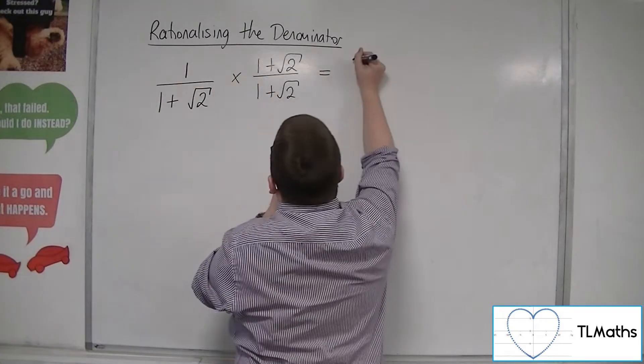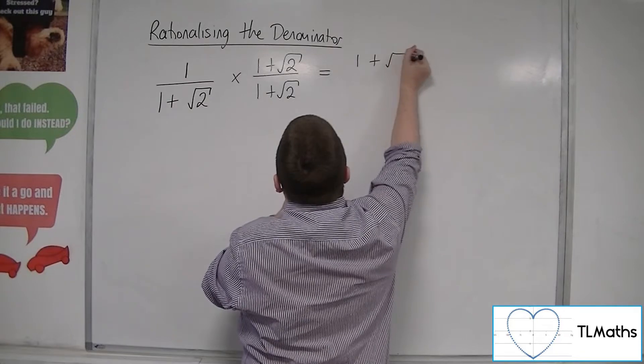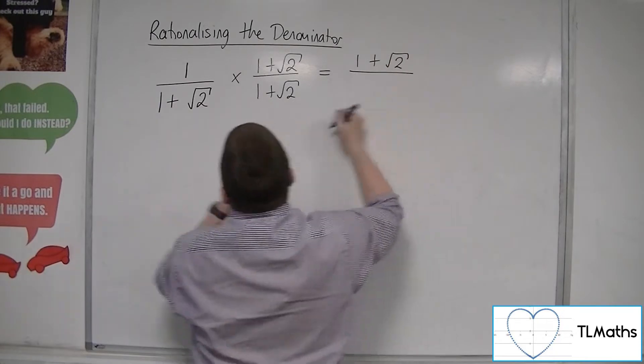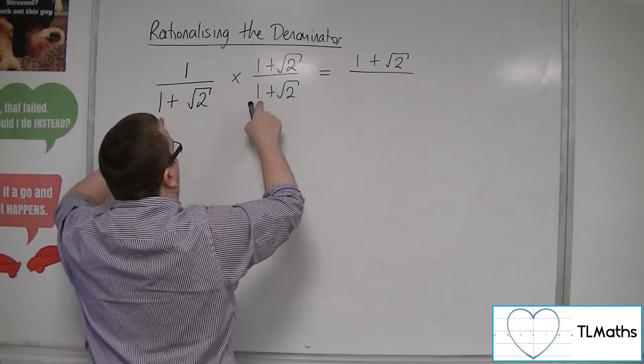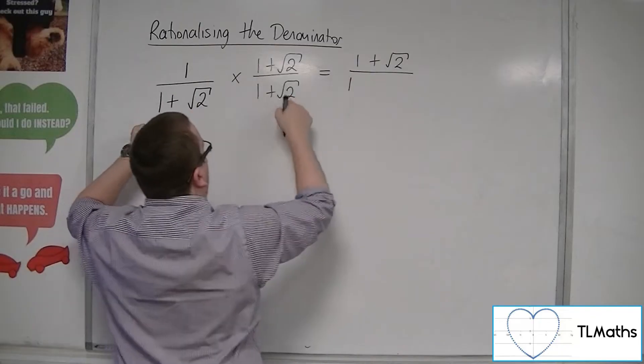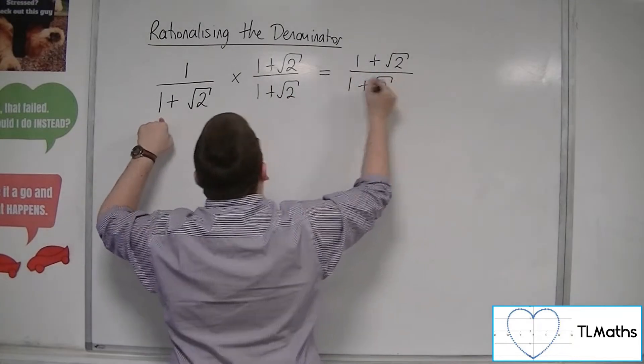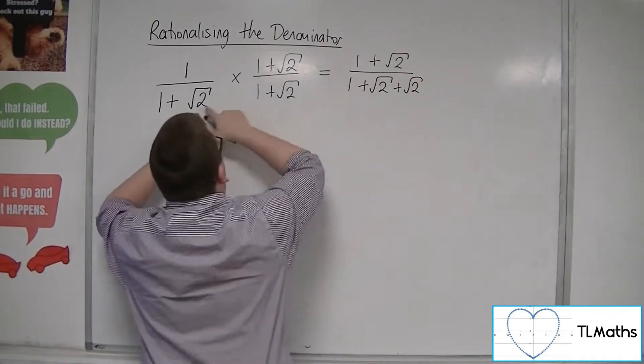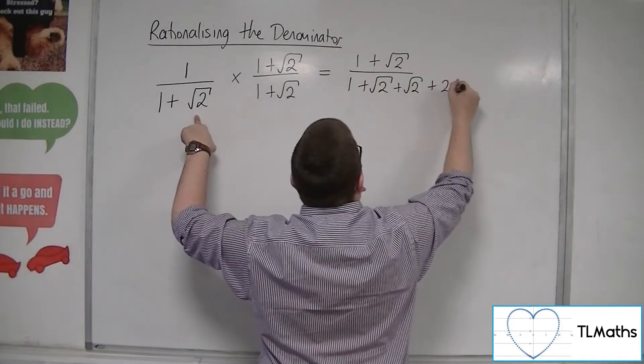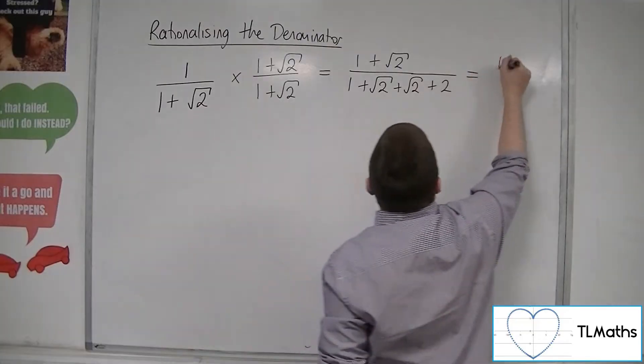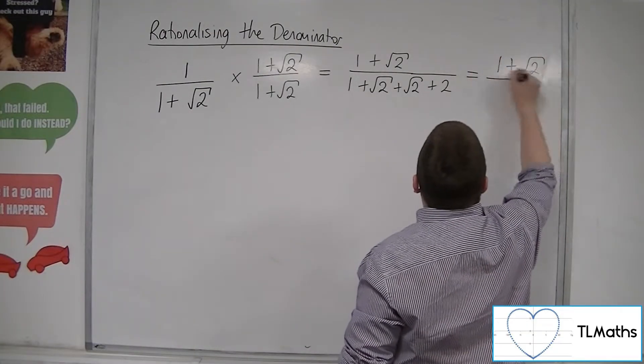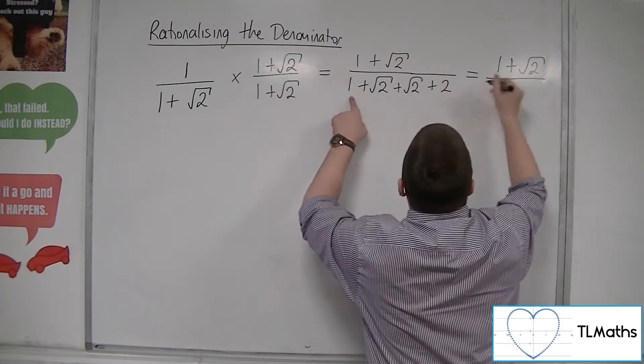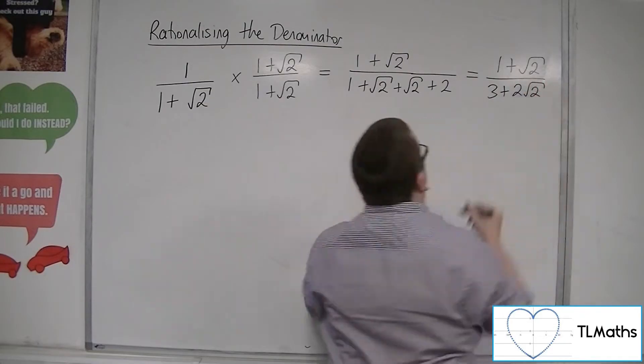So we'd have 1 times 1 plus root 2, so 1 plus root 2. And we'd get 1 times 1, 1 times root 2, root 2 times 1, and root 2 times root 2, so 2. And that would leave us with 1 plus root 2 in the numerator, and 3 plus 2 root 2 in the denominator.